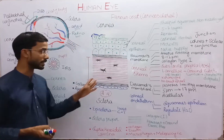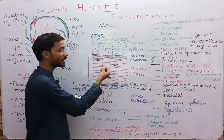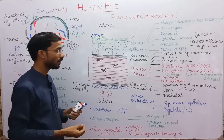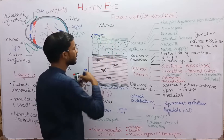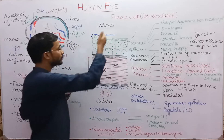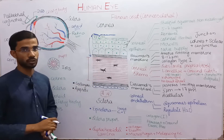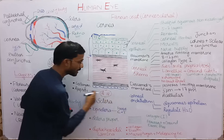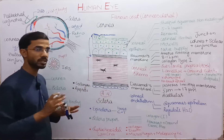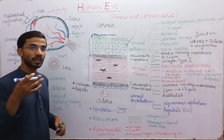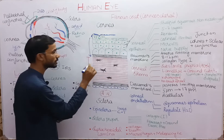There are no blood vessels in the corneal stroma — this is very important. So how does the corneal stroma get oxygen and nutrients? It gets them from two pathways: first, from tears — nutrients pass from the tear layer through the corneal epithelium and Bowman's membrane and finally reach the corneal stroma. Second, from the aqueous humor — nutrients and oxygen pass through Descemet's membrane and reach the corneal stroma.